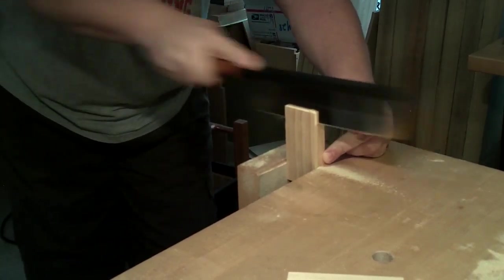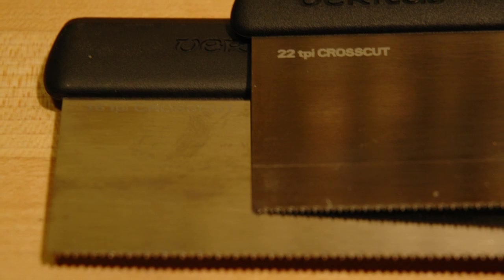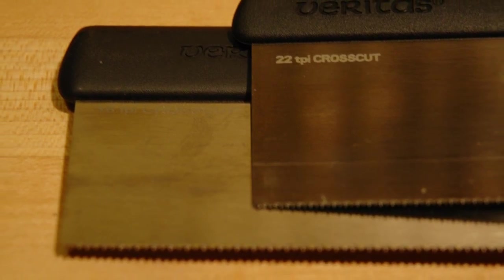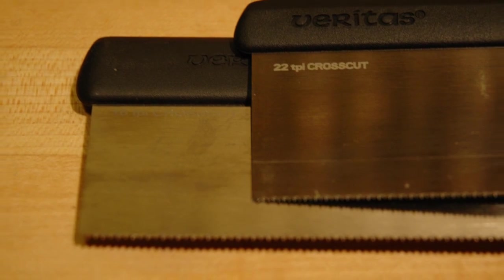One thing I did notice in comparing the gents and the pistol is that the side of the blade on the gents appears to be ground at a higher grit. I'm not sure if this makes any performance difference since supposedly the steel is the same width. It's just an observation.